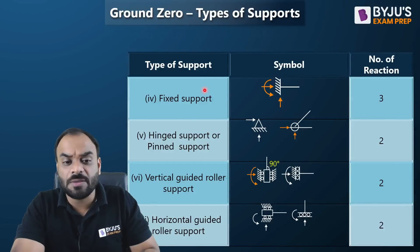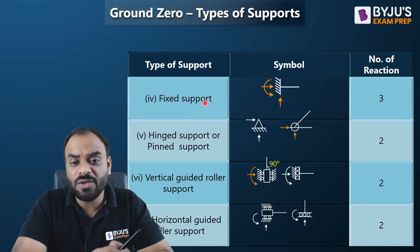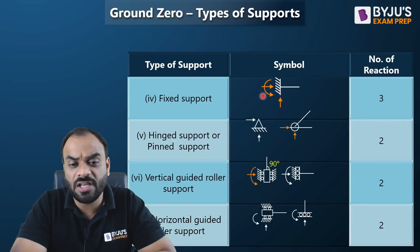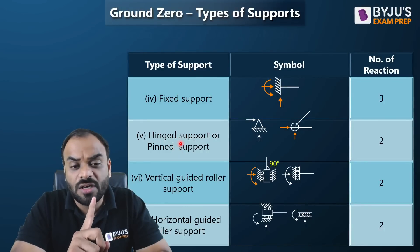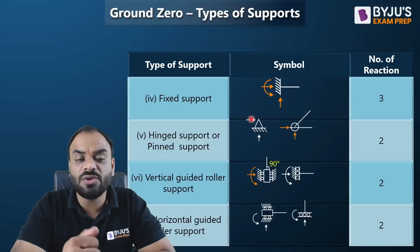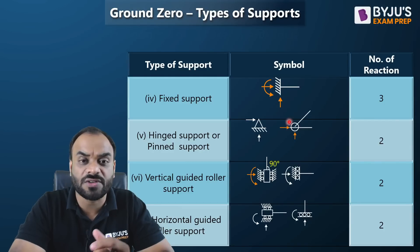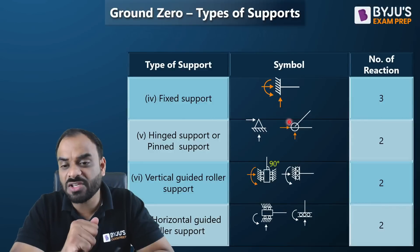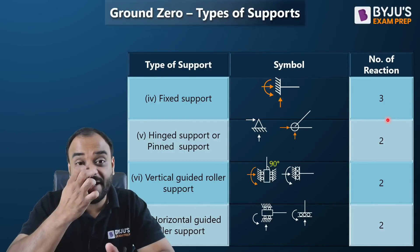The fixed support is the type in which all reactions can develop. In 2D, a fixed support has one vertical reaction, one horizontal reaction, and a moment — so the maximum number of reactions is three. The next type is the hinge or pin support, represented by a triangle. It has one vertical reaction and one horizontal reaction, giving two reactions total. There is no moment reaction at a hinge support.